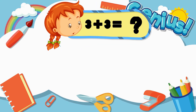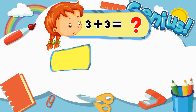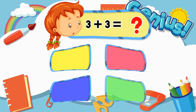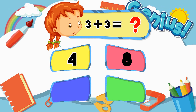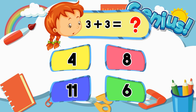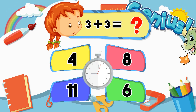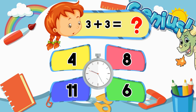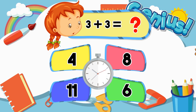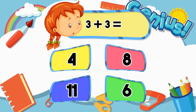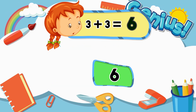What is 3 plus 3? Options: 4, 8, 11, 6. Answer: 6.